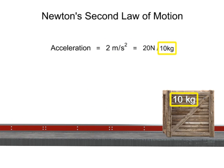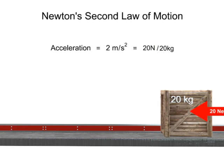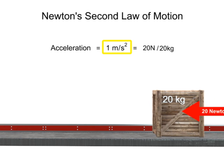If the mass of the box is increased to 20, but the force stays the same, the acceleration will decrease in inverse proportion to 1 meter per second squared.